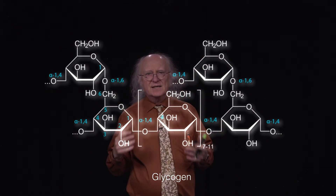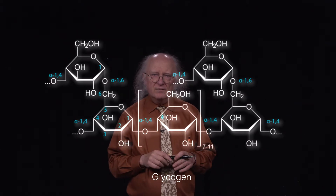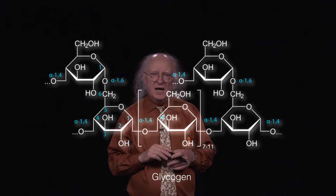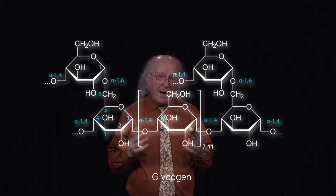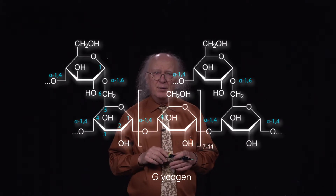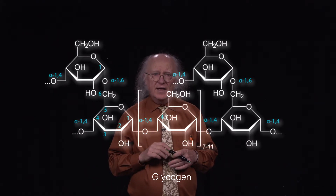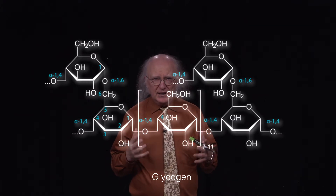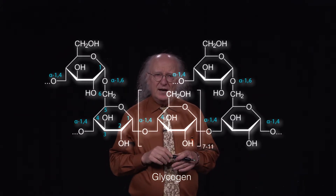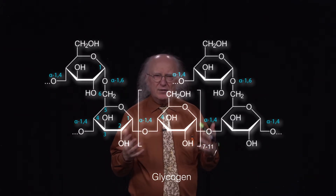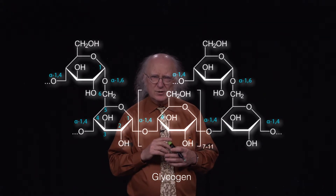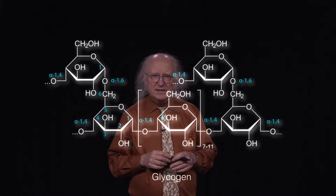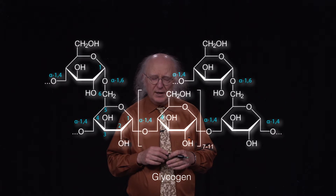So glycogen has many branches — it's one of its characteristic chemical structures. Amylopectin is a plant polysaccharide of glucose similar to glycogen, but it differs in that it only has branches about every 30 to 50 glucoses, so it's not nearly as branched as glycogen.